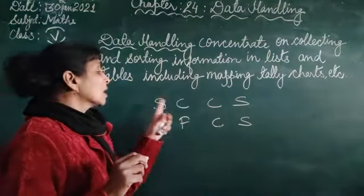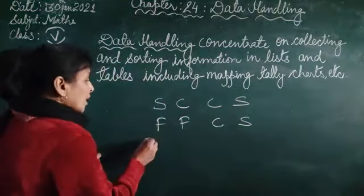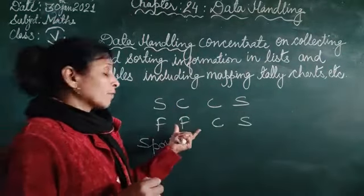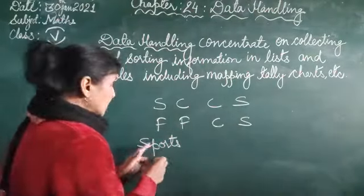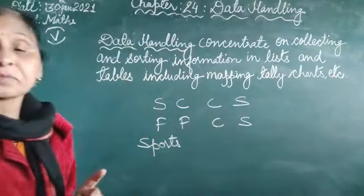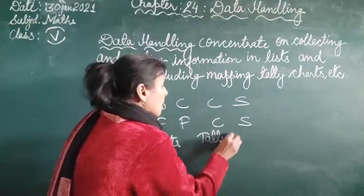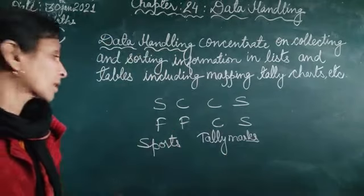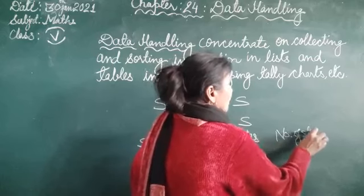S for skating, C for cricket and F for football. Now here I write schools. This information prepared in the tabular form. So we write here the sports name, tally marks,